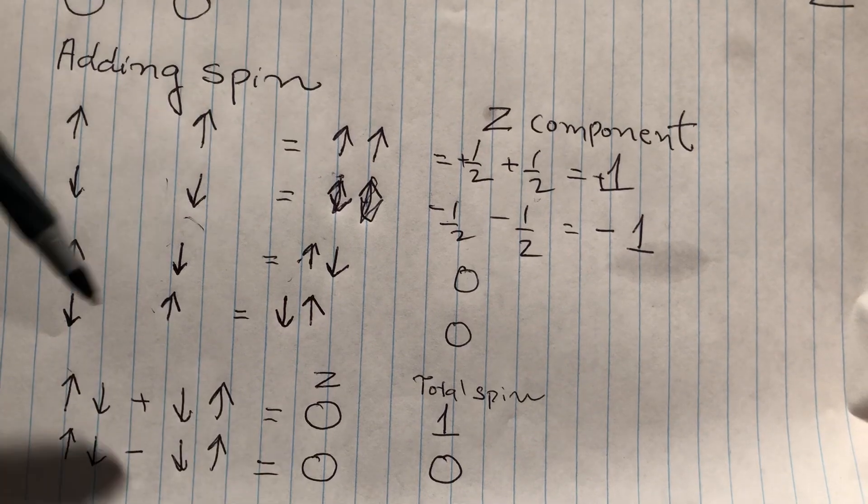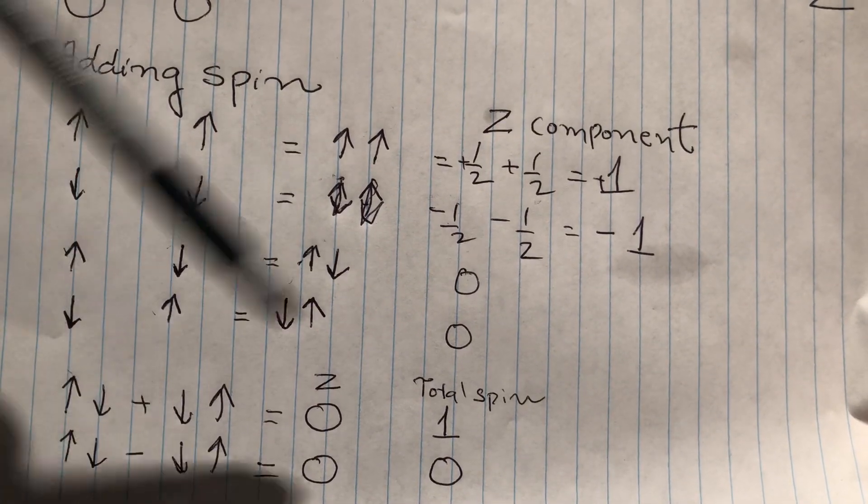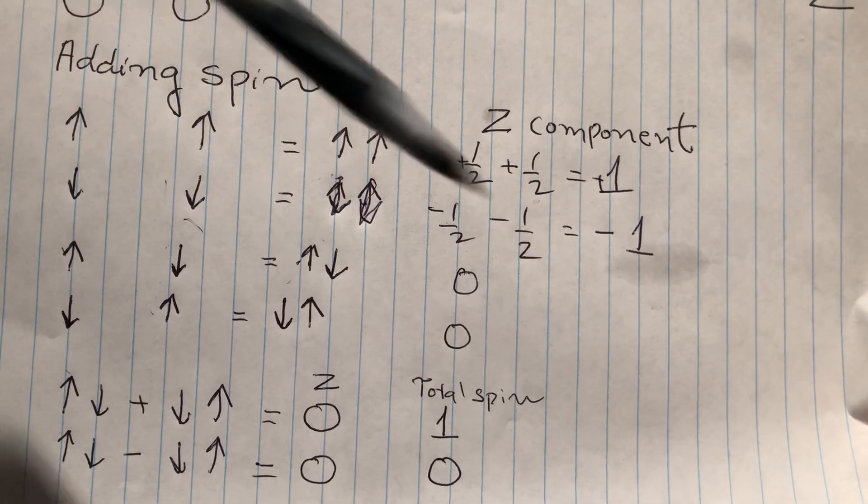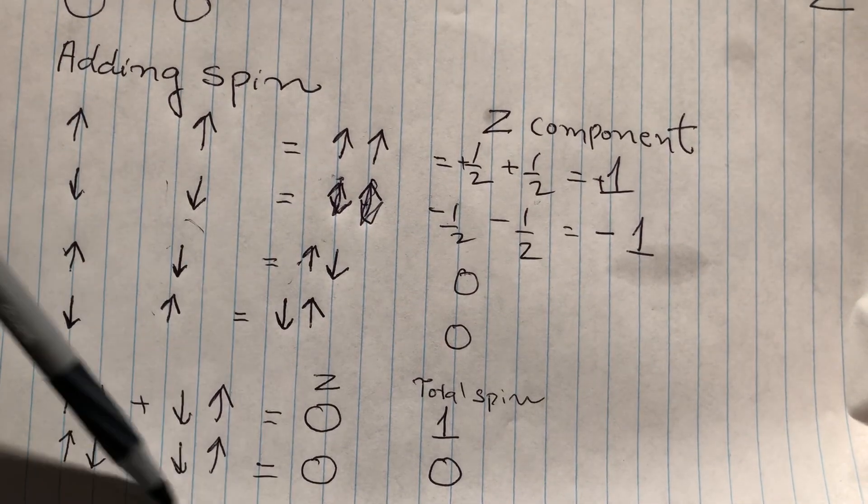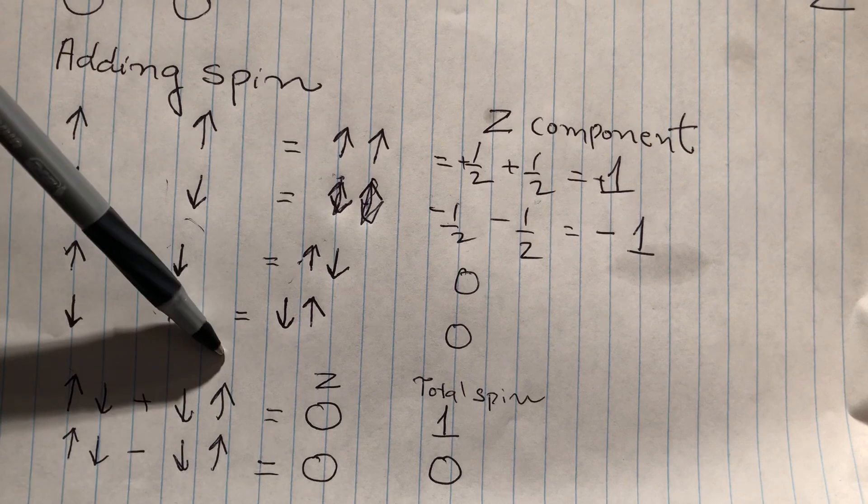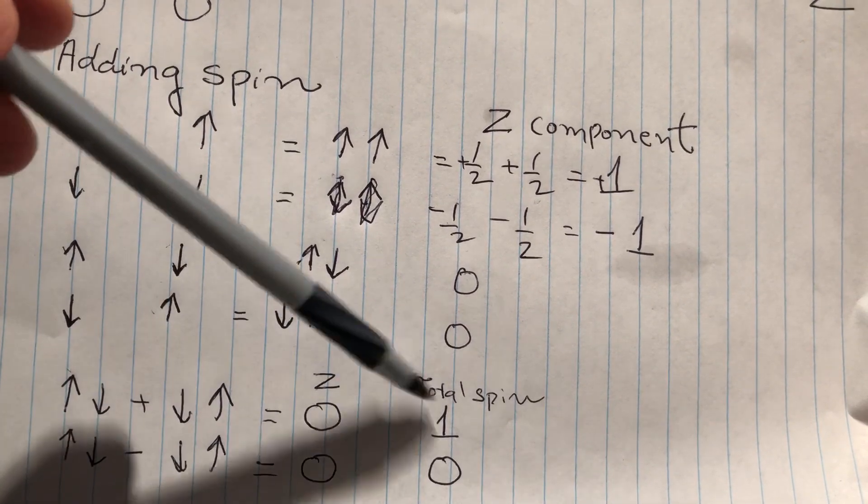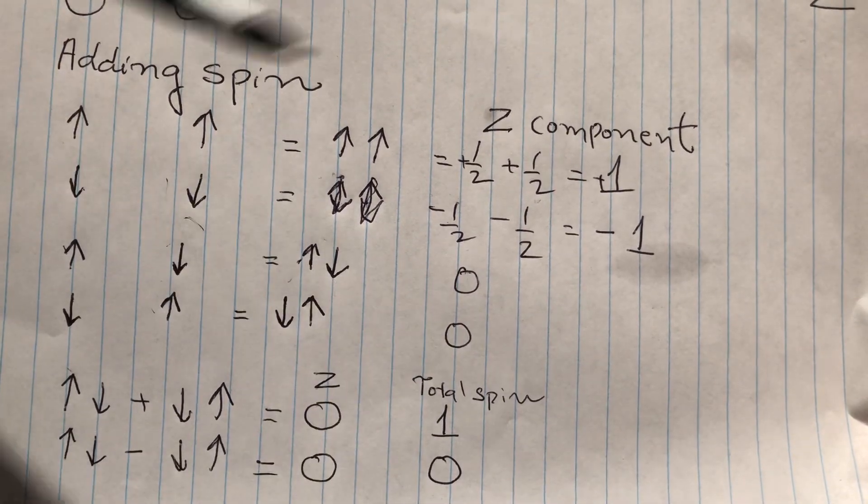Now, the important thing to remember is that this with a plus sign, the total spin is still one and here the total spin is zero. This is the most confusing part where most people get stuck. How come this is spin one and this total spin is zero? Let's explore it further.